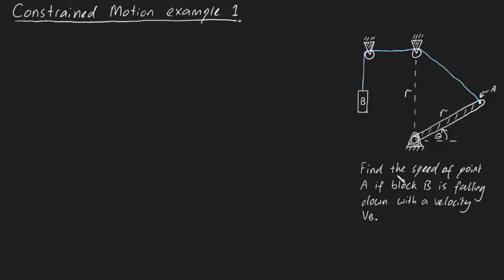Now the first thing I'm going to do to try and solve this problem is define the distance from this fixed point towards block B as being YB. And I'm also going to define the distance from this fixed point towards point A as being a distance YA, like this.